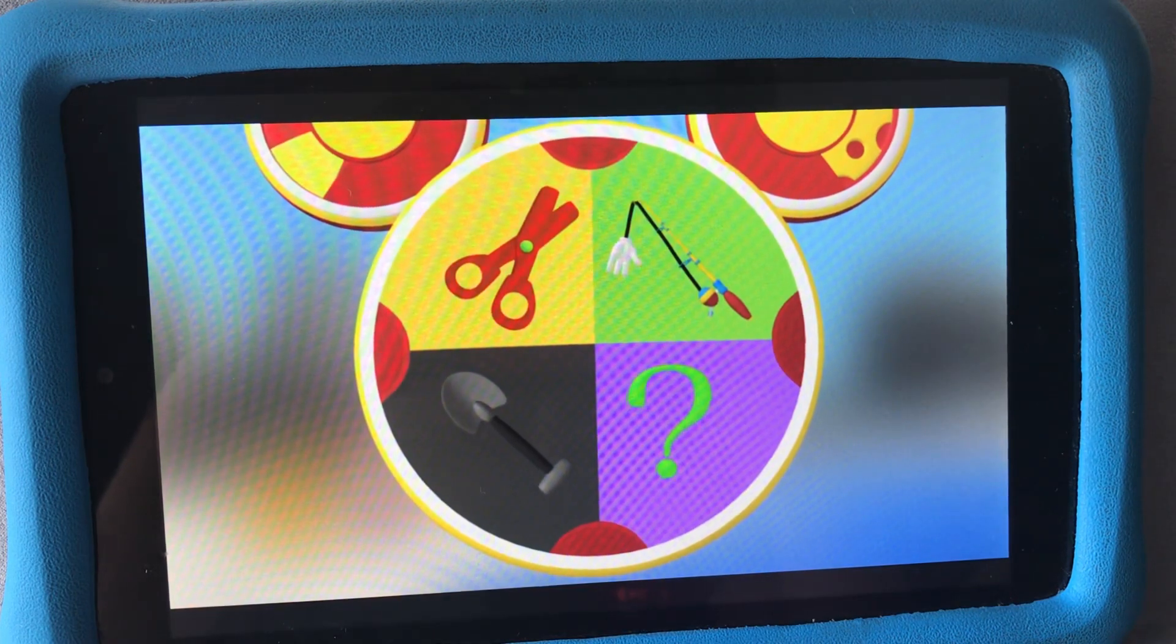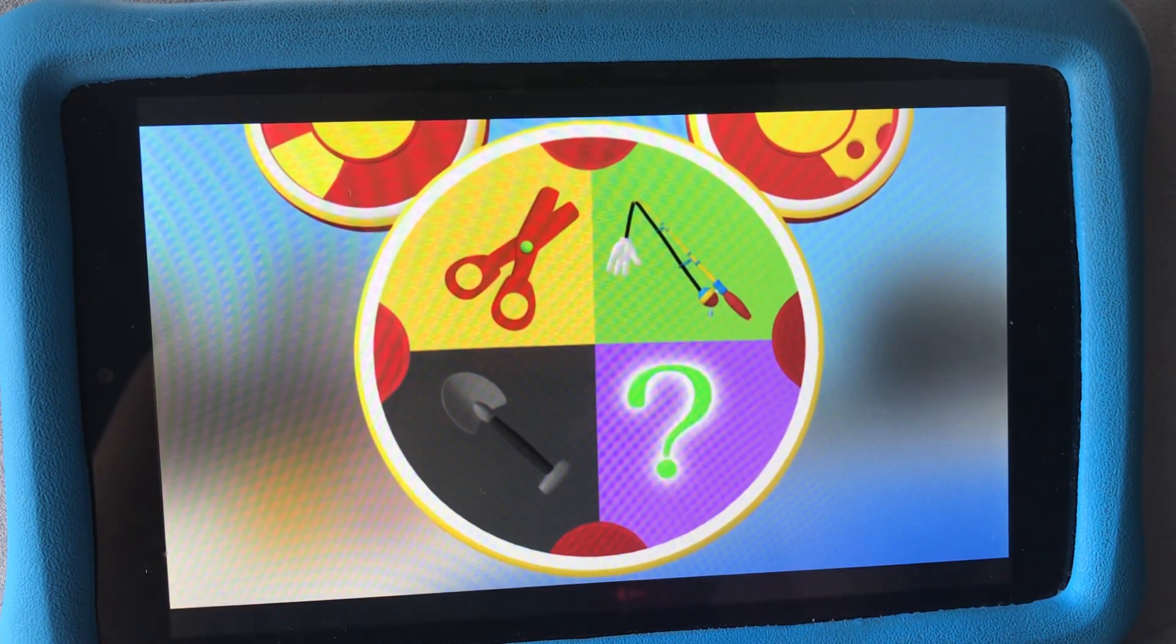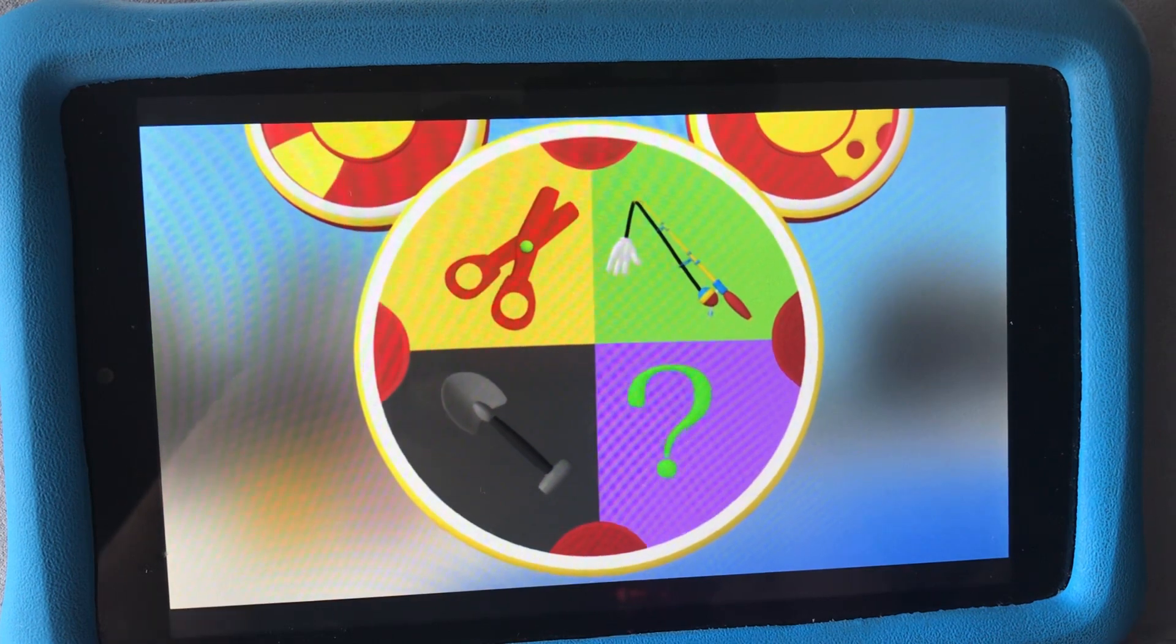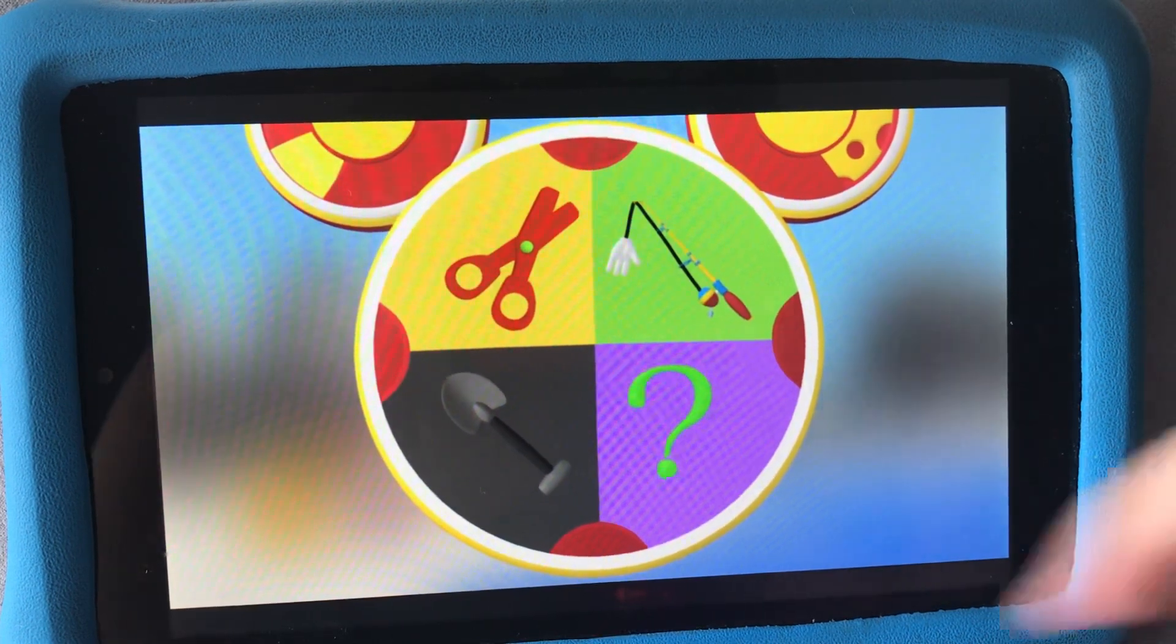We've got safety scissors, my handy fishing rod, and the mystery Mouseketool. Will the fishing rod help us get Donald's green ducky?